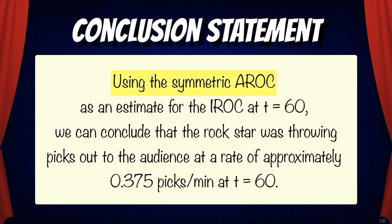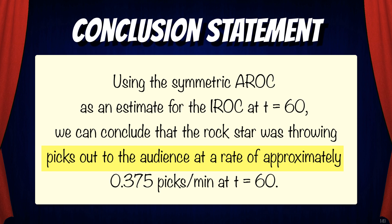And now we need to wrap this up into a conclusion statement. Using the symmetric average rate of change as an estimate for the instantaneous rate of change at t equals 60, we can conclude that the rockstar was throwing picks out to the audience at a rate of approximately 0.375 picks per minute at t equals 60.